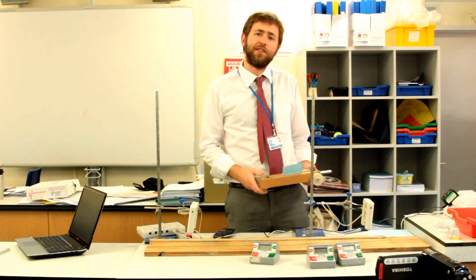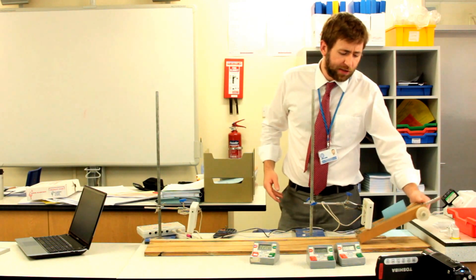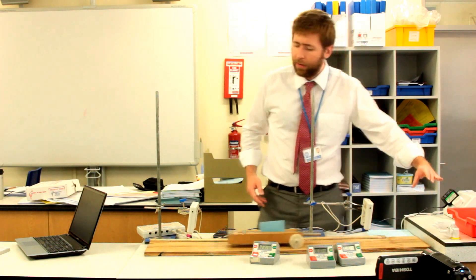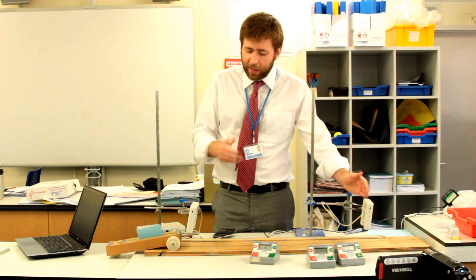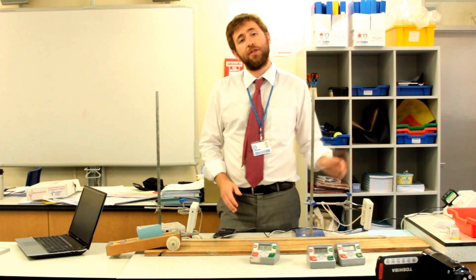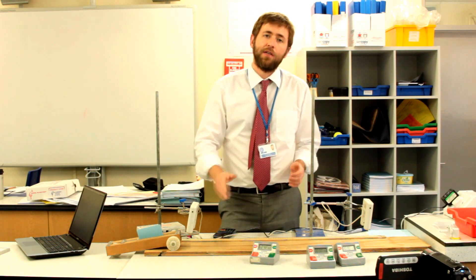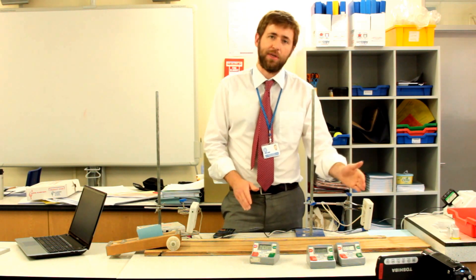And what I've done there is I've actually calculated average speed. Average speed because during the journey the dynamics trolley will have sped up and slowed down. So the average speed between point A and point B is going to be different to the speed at point A and the speed at point B. So what I'm going to do next is I'm just going to measure one of them. I'm just going to measure the initial speed.